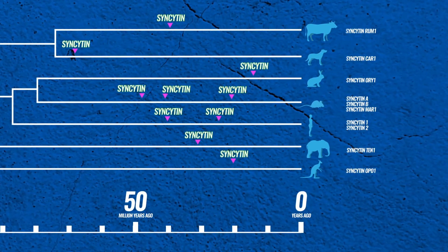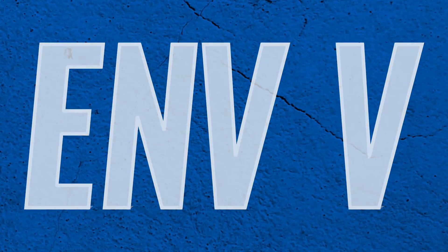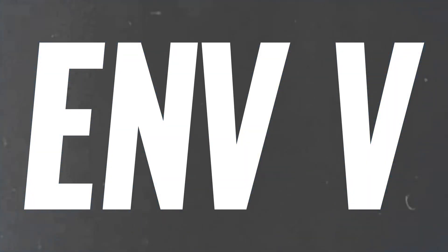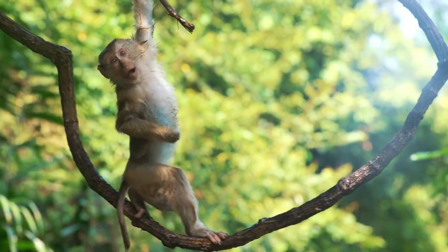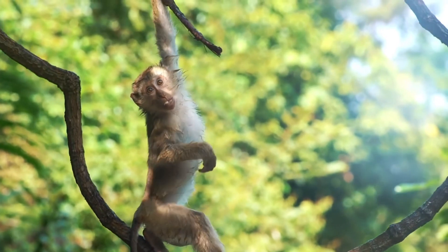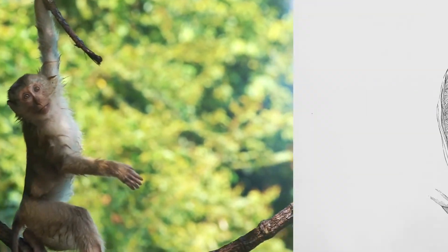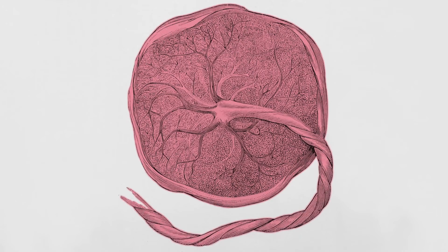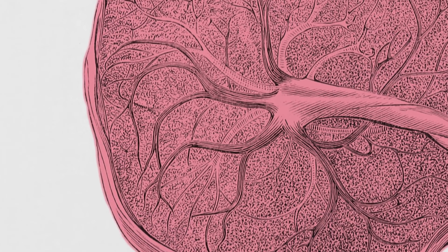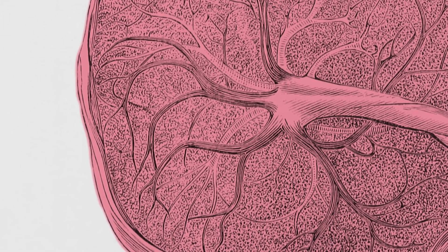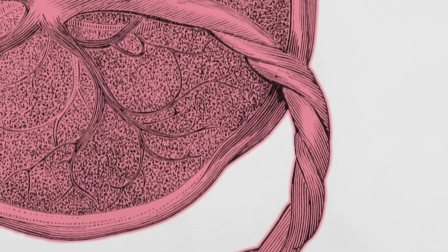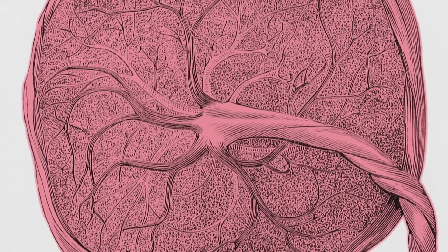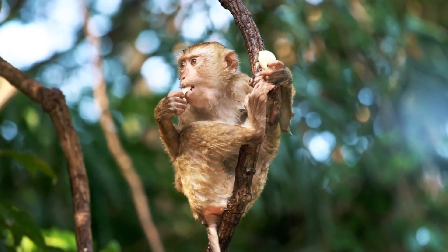This model is supported by findings like the NV syncytin — a domesticated env gene that seems to be crucial for placental formation in old world monkeys like macaques. The gene is found in the human placenta as well, but has lost its ability to fuse cells together. The human NV syncytin could be a syncytin gene that has been replaced in humans by syncytin-1 and syncytin-2, but is still functioning in old world monkeys.